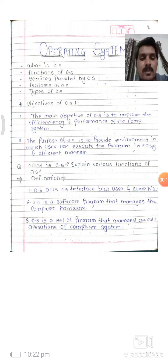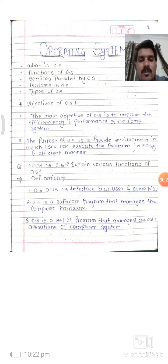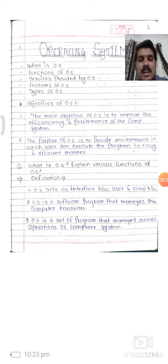We are going to cover some of the points in this lecture. First point is what is the operating system. After that, functions of operating system. After that, services provided by the operating system. Next point, features of operating system. Next, types of operating system. So first we are going to cover the objective of the operating system.